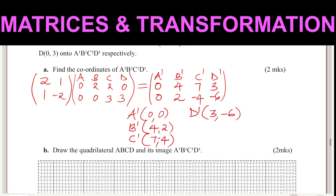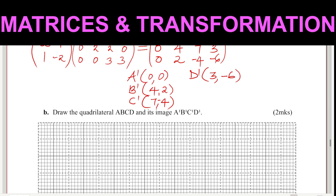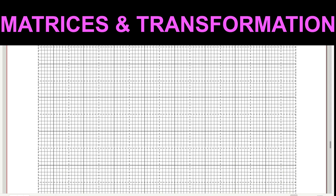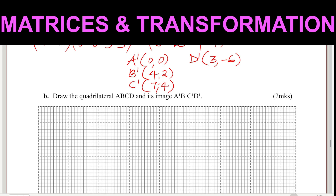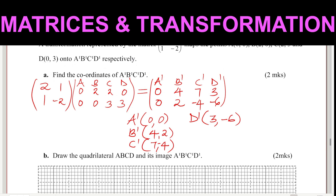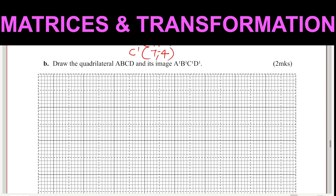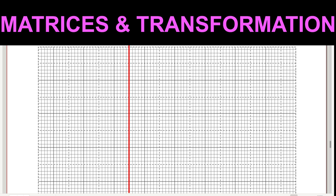That is the first part. For the second part, you're supposed to draw the quadrilateral ABCD and its image. Let me look at the graph to see how much space is needed — checking the negative and positive values. The space looks okay, so I can start by drawing the axes.